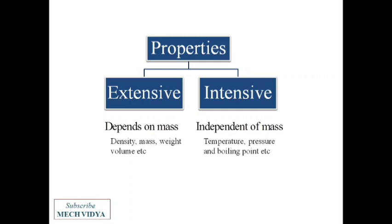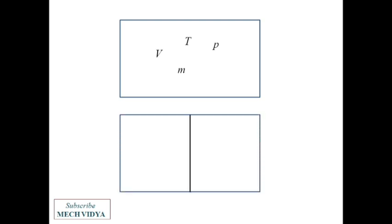One easy way to remember and distinguish between extensive properties and intensive properties is to imagine a system of mass m, volume v, and temperature t. Now if I divide the system into two parts using a partition, as a result the mass of each part will become m by 2, that is mass will become half. The volume will also get half.